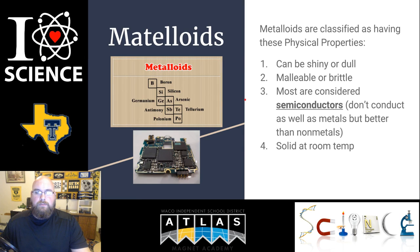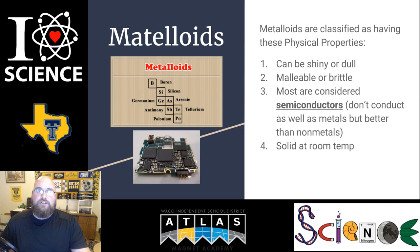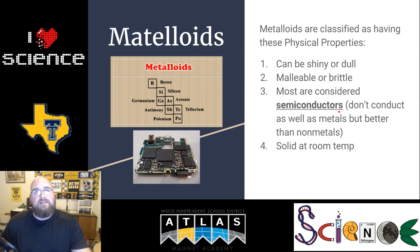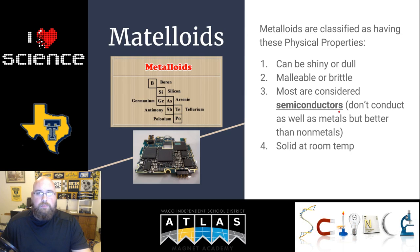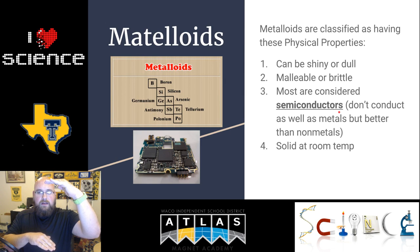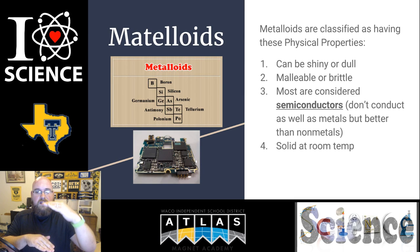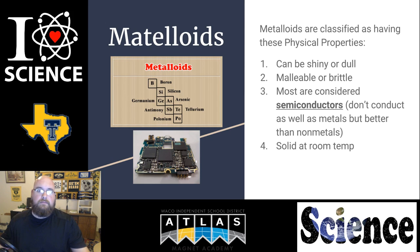Our last group is metalloids. Metalloids are classified as having a shiny or dull luster; they can be malleable or brittle. Many of them are considered semiconductors, meaning they do not conduct electricity and heat as well as a metal, but they conduct it much better than a nonmetal. Think of it as a scale: insulators at the bottom, conductors at the top — semiconductors are right in the middle. Most metalloids are solid at room temperature.